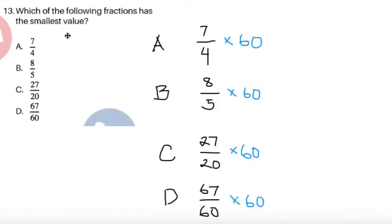To continue, which of the following fractions has the smallest value? We have 7 fourths, 8 fifths, 27 over 20, and 67 over 20. Now the easiest way to compare these is to multiply by the LCD.